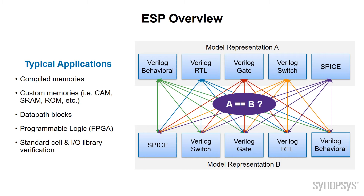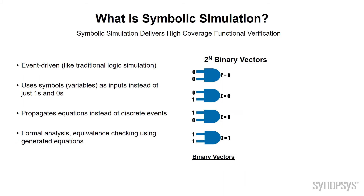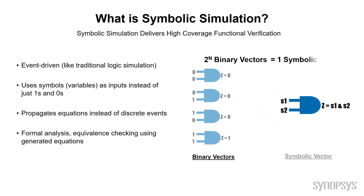Additional applications include datapath blocks, FPGA programmable fabrics, and standard cells including logic and some I/O cells. ESP uses symbolic simulation to deliver efficient functional coverage. Symbolic simulation works the same as a traditional logic simulator, except it can use symbols instead of just ones and zeros. A symbol is both a one and a zero at the same time. A two-input AND gate needs four binary vectors to verify, but ESP needs only one symbolic vector.